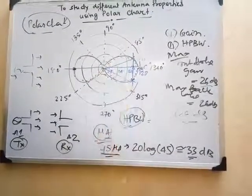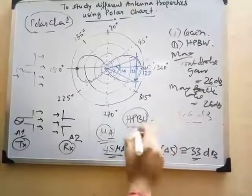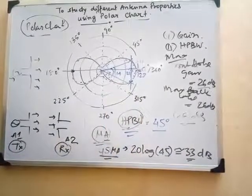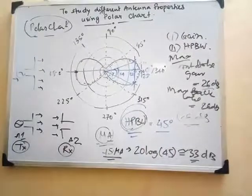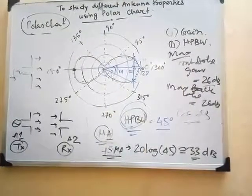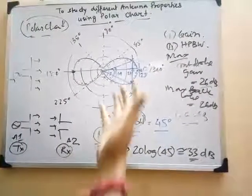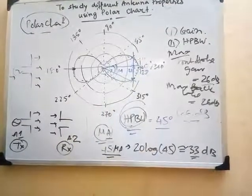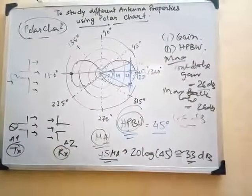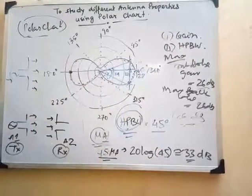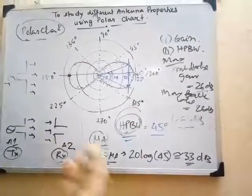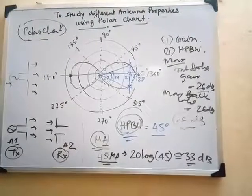From the origin, you join the two intersection points at the 3 dB level. The angle between these two lines is your HPBW — for example, if the angle is 45 degrees, then HPBW = 45°. The significance of HPBW is that it tells you how much angular width the antenna covers while radiating at least half its maximum power in the front direction. This is the technique used to plot antenna properties on a polar chart, and we will discuss further details in the laboratory.